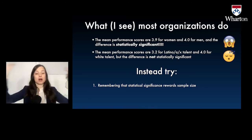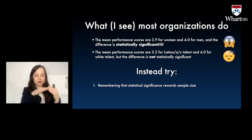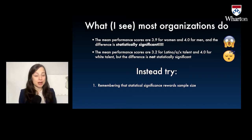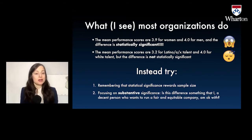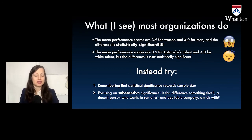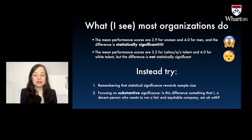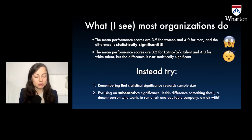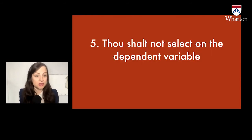Whereas if you're working with two large groups, say men and women at your organization, you're much more likely to pick up statistical significance with a small difference. So you're actively ruling out the experiences of minorities in your company by being hyper-focused on statistical significance. Instead, focus on substantive significance: is this a difference that I, a decent person who wants to run a fair and equitable company, am okay with? 3.2 versus 4.0 is not something I would be okay with.